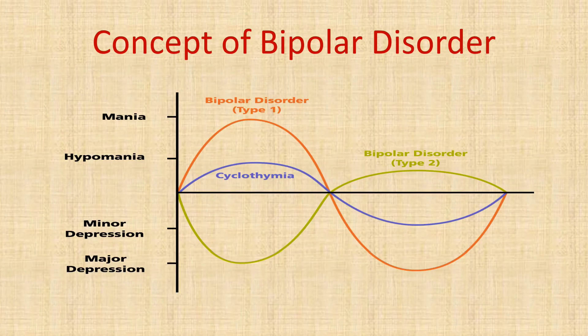In bipolar 1 disorder (represented by the orange line), at least one episode of full-blown mania must be present. In bipolar 2 (yellow line), there is at least one episode of hypomania alternating with depressive episodes, but no full-blown mania. Cyclothymia is a subtle form of bipolar disorder in which none of the episodes qualify the criteria for either mania or major depression.